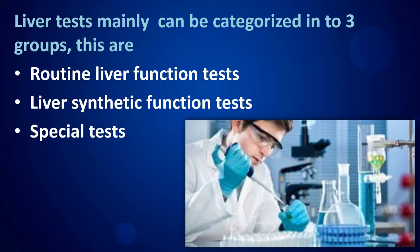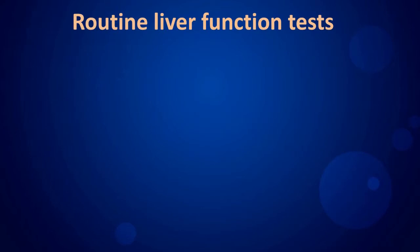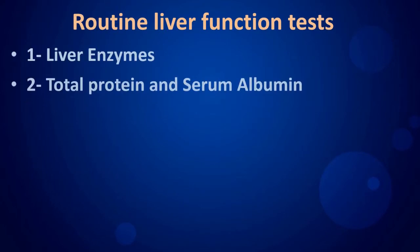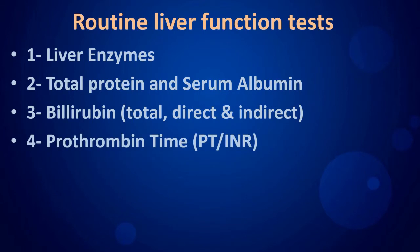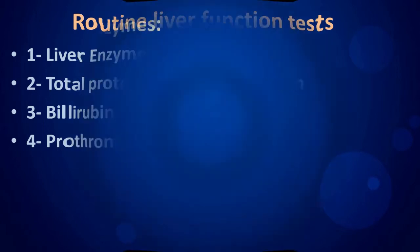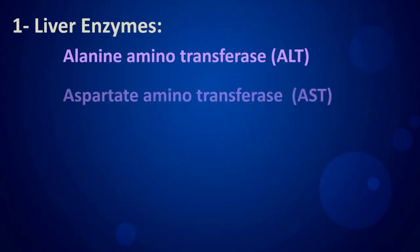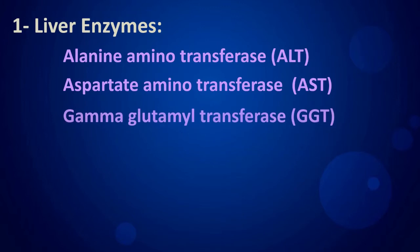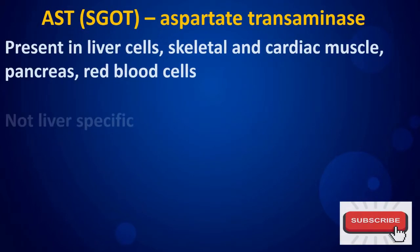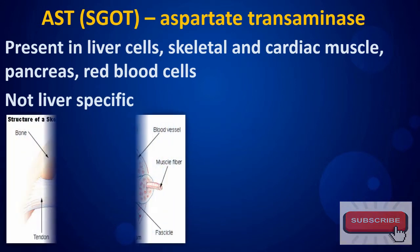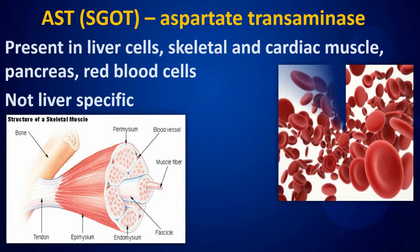Routine liver function tests include liver enzymes, total protein, serum albumin, bilirubin, and prothrombin time. The key liver enzymes are alanine aminotransferase (ALT), aspartate aminotransferase (AST), gamma-glutamyl transferase (GGT), and alkaline phosphatase (ALP). AST is present in liver cells, skeletal and cardiac muscle, pancreas, and red blood cells.